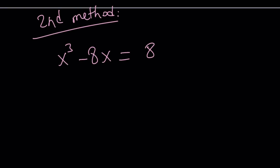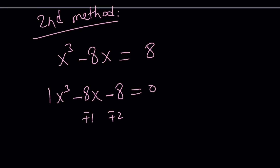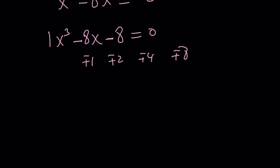The rational root theorem tells us: when you put everything on the same side and this is a monic polynomial — meaning the coefficient of x³ is 1 — then if there are any rational roots, they have to be a factor of negative 8. So the good candidates are ±1, ±2, ±4, and ±8. You test them out, and you realize one of these is going to work.